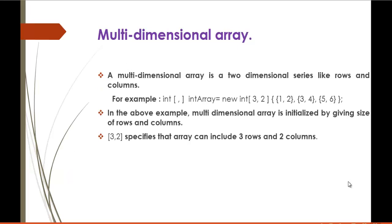Now we'll jump into multi-dimensional arrays. Although one-dimensional array is the most commonly used array in programming, multi-dimensional arrays are certainly not rare. A multi-dimensional array is a two-dimensional series like rows and columns. For example, 'int[,]' — notice the comma inside the square brackets. In the last session we did not specify the comma, but in multi-dimensional arrays we have to specify the comma because the comma indicates that a multi-dimensional array reference variable is created. The array name is 'intArray' and we use 'new int' with three rows and two columns.